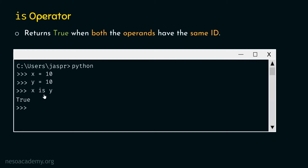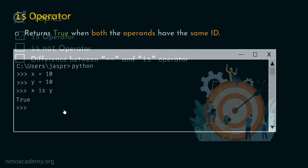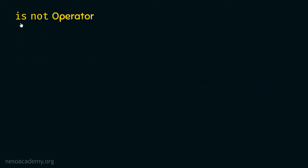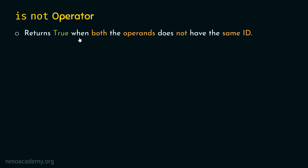I hope the idea of the `is` operator is completely clear. Now, as we have understood the concept of `is`, let's move on to the next topic — the `is not` operator. The `is not` operator returns true when both operands do not have the same ID.